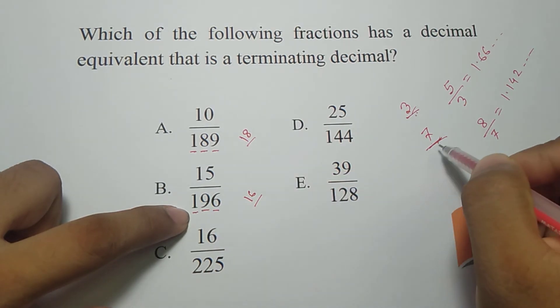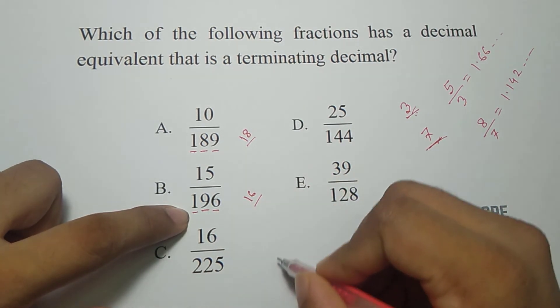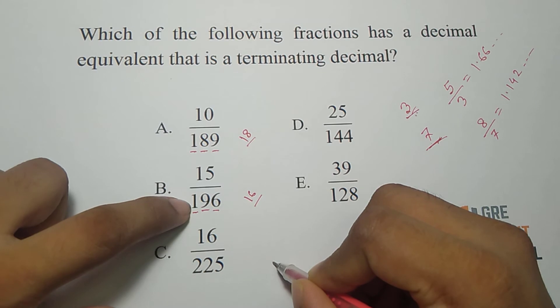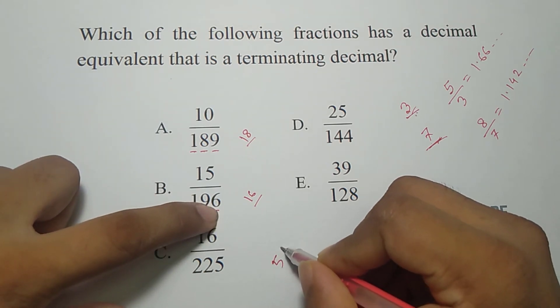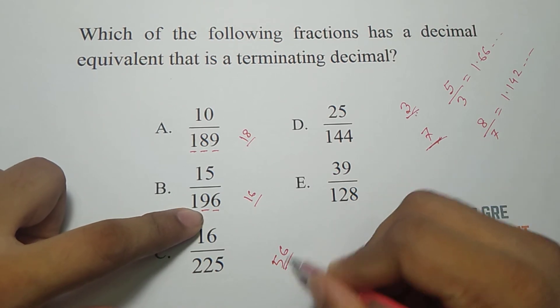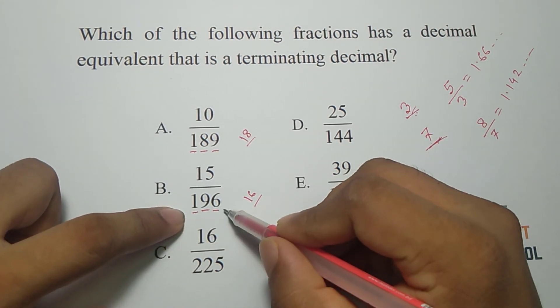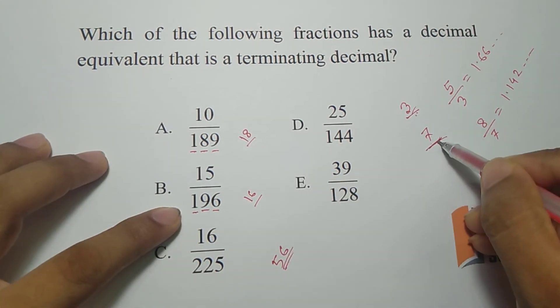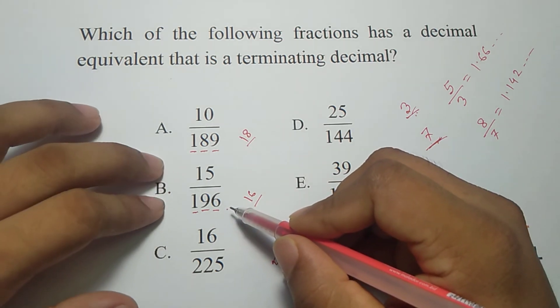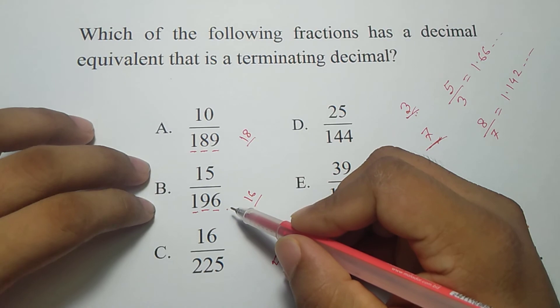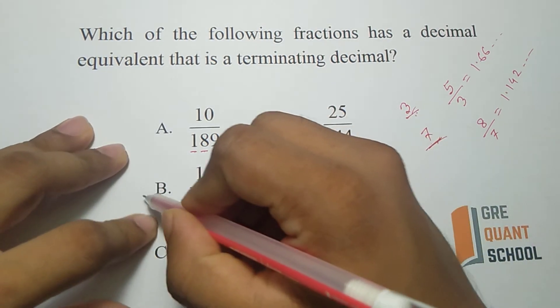If 7 goes 2 times that is 14, remaining 5 comes 6, 56, 7 into 8, 56, yes. 196 is divisible by 7 so there is a 7, so this fraction would be non-terminating.